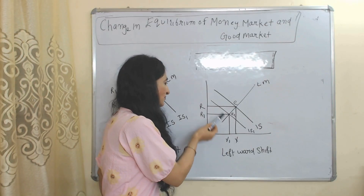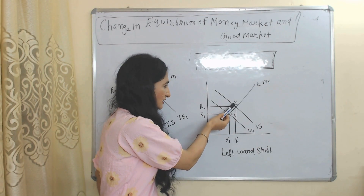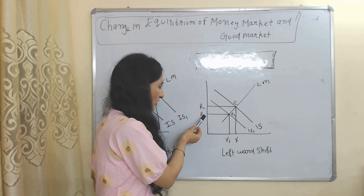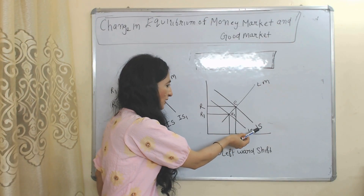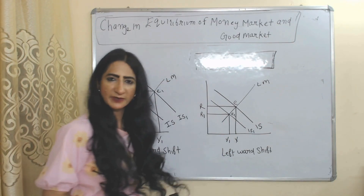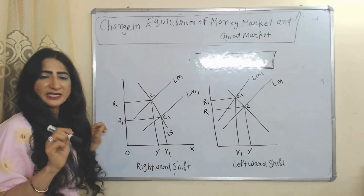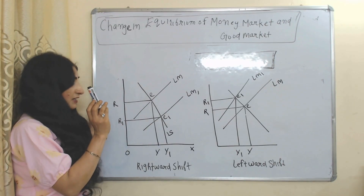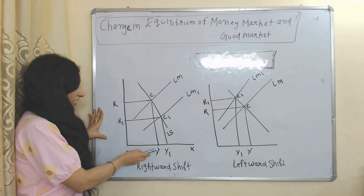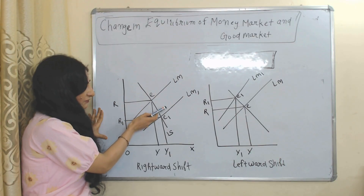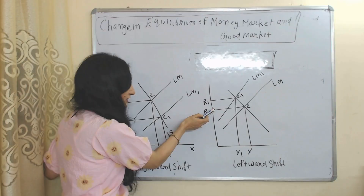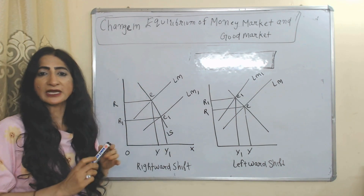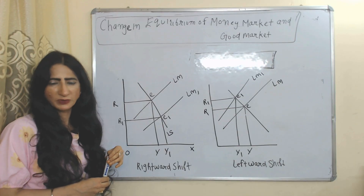A decrease in income and interest rate will shift the IS curve leftward from IS to IS1, giving a new equilibrium E1. For LM curve shifts: a fall in interest rate and increase in income will shift the LM curve rightward, while an increase in interest rate and reduction in income will shift the LM curve leftward. This is all about the IS-LM model. Thank you so much for watching this video. Bye, take care.